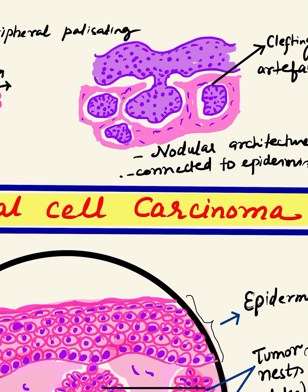The second important point is that in BCC the tumor cell nests will have some connection with the epidermis at some point. In the diagram, this represents the epidermis above the dermis, with the tumor arising from the basal layer and maintaining that connection. We have to draw that connection from the epidermis. The tumor is present in the form of nodules.